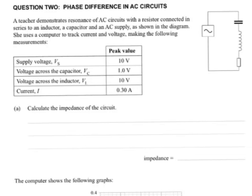Question 2: Phase difference in AC circuits. A teacher demonstrates resonance of AC circuits with a resistor connected in series to an inductor, a capacitor and an AC supply as shown in the diagram. She uses a computer to track current and voltage making the following measurements. So that's useful.